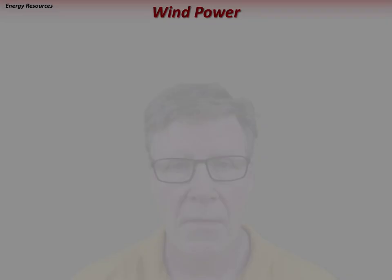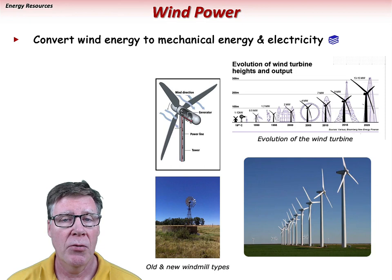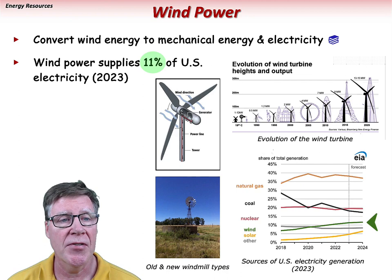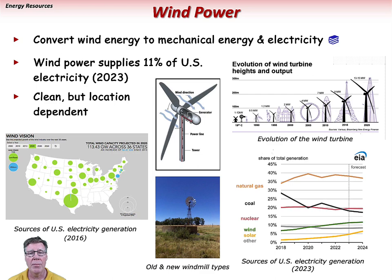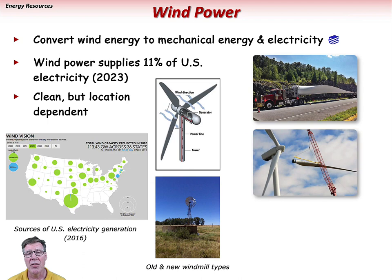Wind power has been used for centuries to drive mills and pumps. Wind turbines now convert wind energy to mechanical energy to create electricity, supplying about 11% of U.S. electricity as of 2023. This clean source of power is location-dependent, with the Midwest having a large number of wind farms. Wind power cannot produce electricity at a constant rate as it is dependent on environmental conditions. Another factor is the lifetime and disposal of large turbine blades — some can last up to 20 years, but many are replaced in less than 10, and their weather-resistant compositions typically make them unfit for recycling, ending up in landfills.